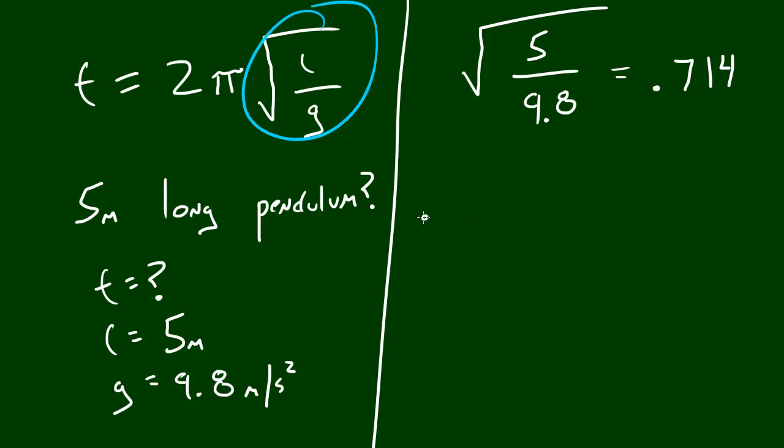So now all we have to do is take this value, .714, and times it by 2. And times that by pi, which is 3. Well, I'll just go ahead and write the symbol. I'm too lazy to write all those numbers. And when we multiply all these together, we get 4.4879 seconds.